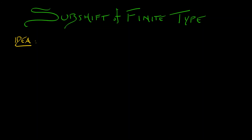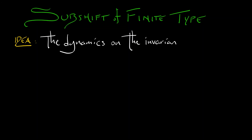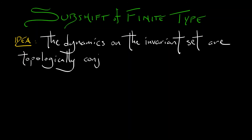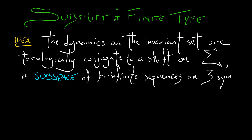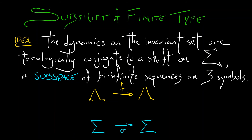This map is going to have an invariant set, and the dynamics on that invariant set are topologically conjugate to a shift on capital Sigma — a certain subspace of bi-infinite sequences on three symbols. We've got those three horizontal strips, so this is not a full shift on three symbols; it is a subshift. There is the now-familiar diagram: dynamics on the invariant set lambda, a space of symbol sequences Sigma with a shift map, and a topological conjugacy assigning itineraries to points in the invariant set. The key is the definition of this space Sigma — this subspace of bi-infinite sequences on three symbols.